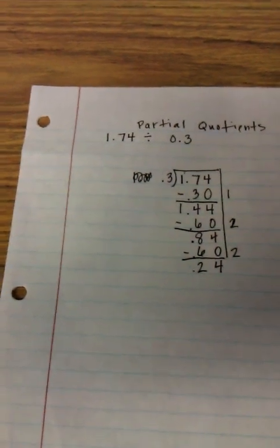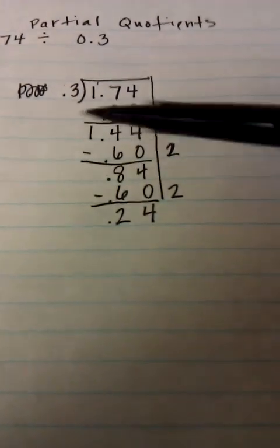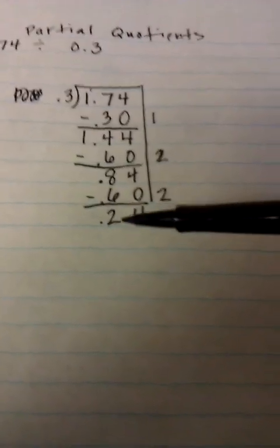I'm left with 24 hundredths. Now here's the part where a lot of students start to get confused, because they know, well, I don't have at least one group.